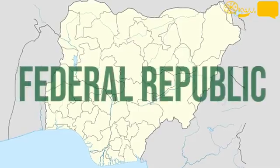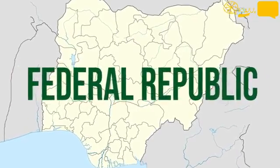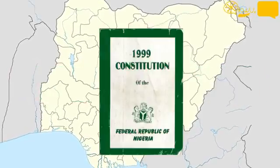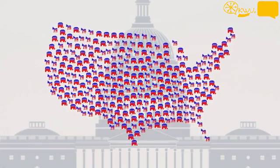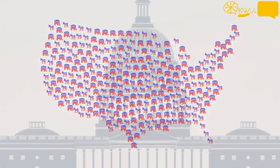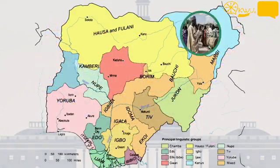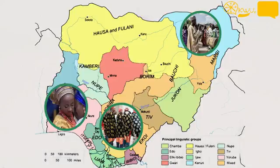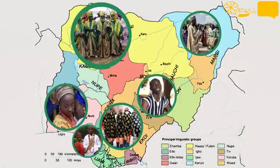Currently, Nigeria operates as a federal republic with governing powers upheld by the constitution. This political model was inspired by the United States and was adopted in hopes that it would guarantee equal and fair representation of Nigeria's ethnically diverse groups.